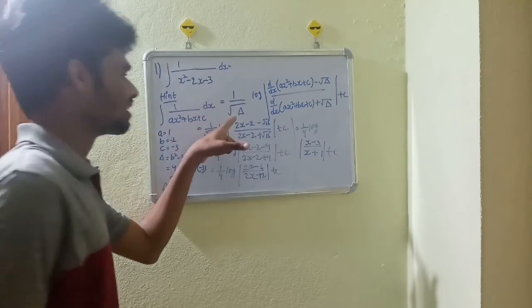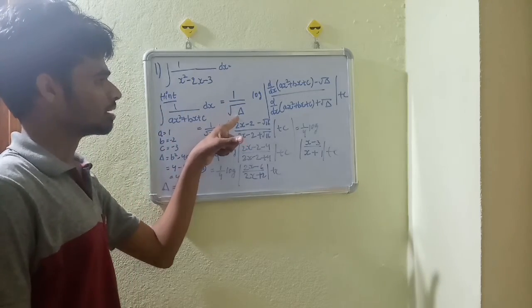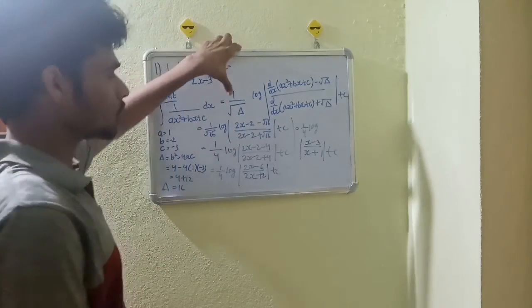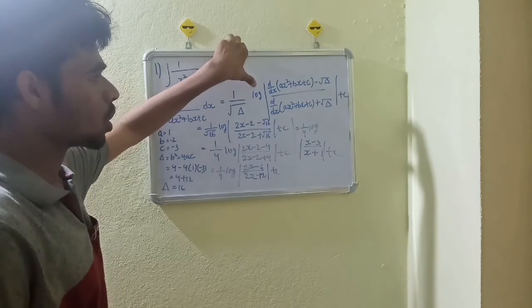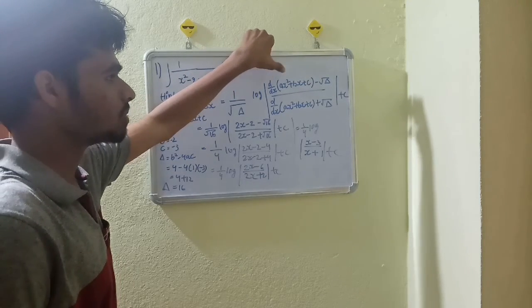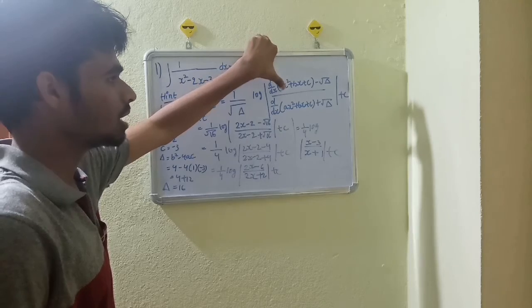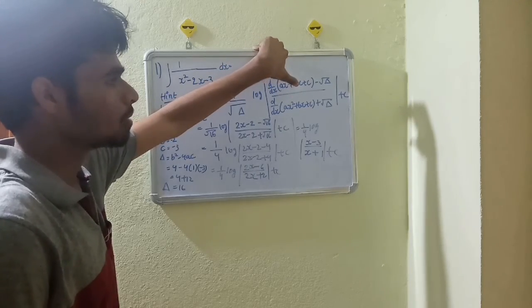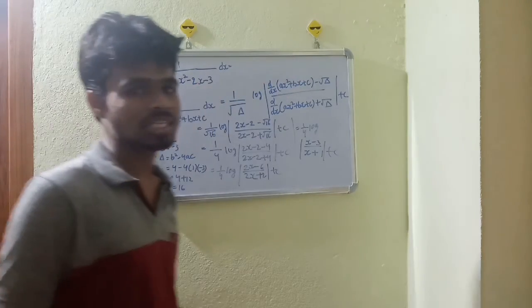The formula is 1 by root of modulus of delta into log of (d/dx minus root(delta)) by (d/dx plus root(delta)) plus c.